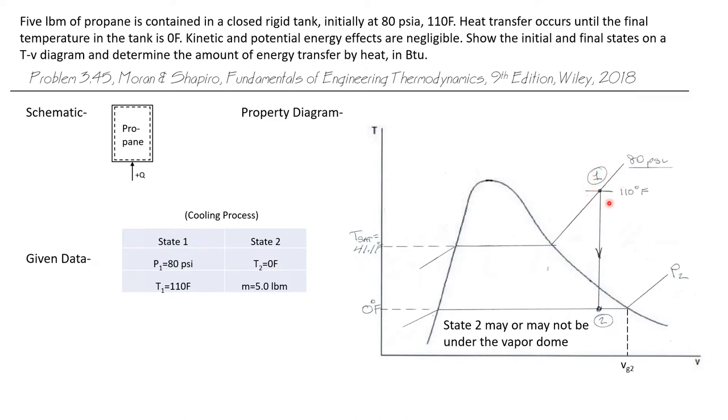Now the process is a constant volume process being a rigid tank. And so it's going to follow a vertical line straight down to state two, which is at zero degrees Fahrenheit.